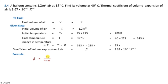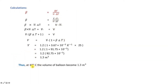Change in temperature ΔT = 313 − 288 = 25 K. The coefficient of volume thermal expansion beta = 3.67 × 10⁻³ per Kelvin. The formula is: beta = ΔV / (V₀ × ΔT), which means beta = (V − V₀) / (V₀ × ΔT).